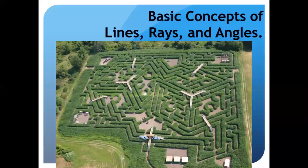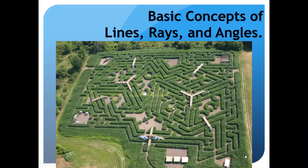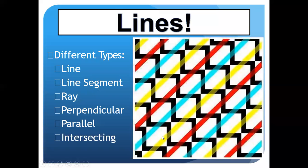Now let's look at the basic concepts of lines, rays, and angles, which you can see on screen. We will cover what a line is, what a ray is, and what an angle is. There are different types of lines: line, line segment, ray, and intersecting lines.